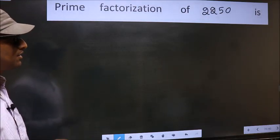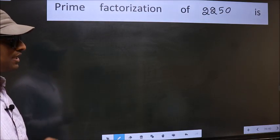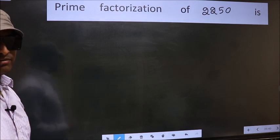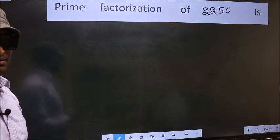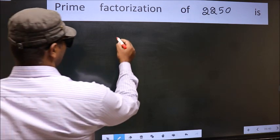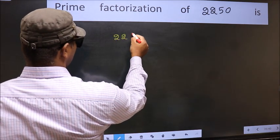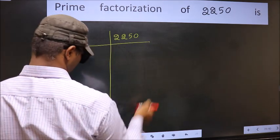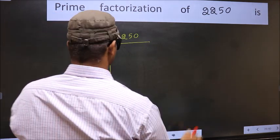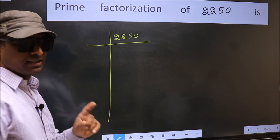Prime factorization of 2250 is. To do prime factorization, first we should frame it in this way. 2250.